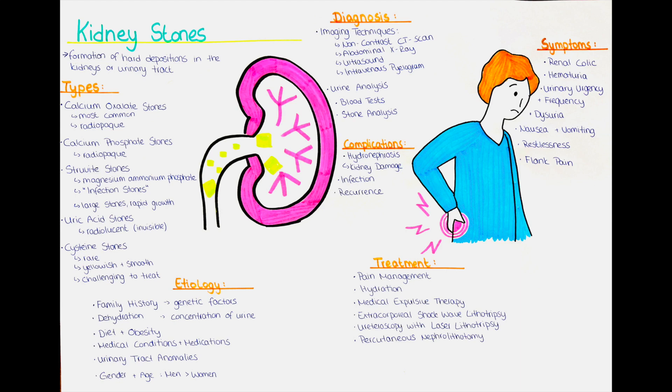Percutaneous nephrolithotomy is a surgical procedure performed under general anesthesia for the removal of larger stones. It involves making a small incision in the back and using specialized instruments to remove or break up the stones. After treatment, patients are often advised to make dietary and lifestyle changes to reduce the risk of recurrent kidney stones. This may involve increasing fluid intake, adopting a balanced diet low in sodium and oxalate, and managing underlying medical conditions contributing to stone formation.